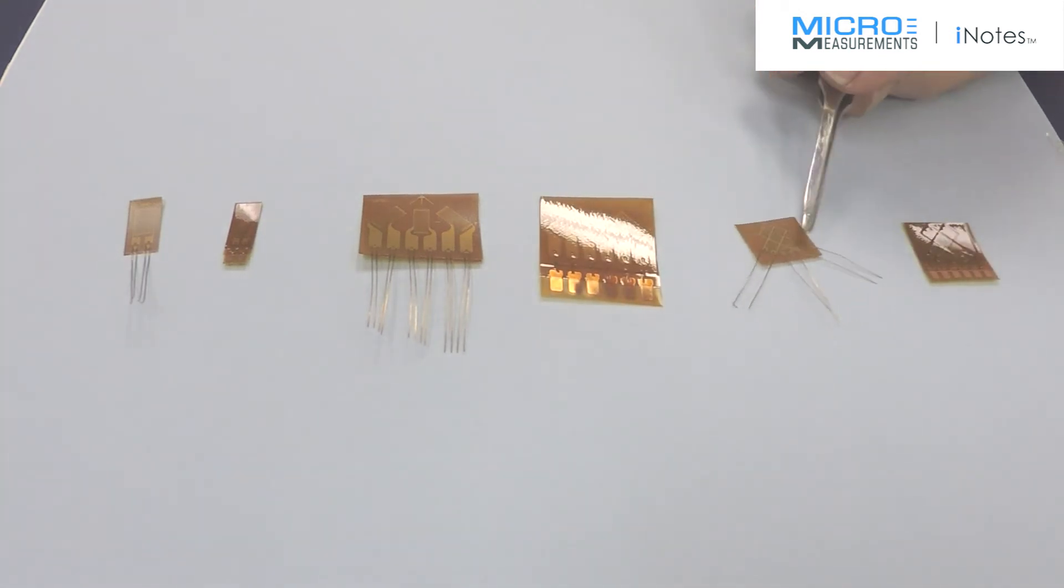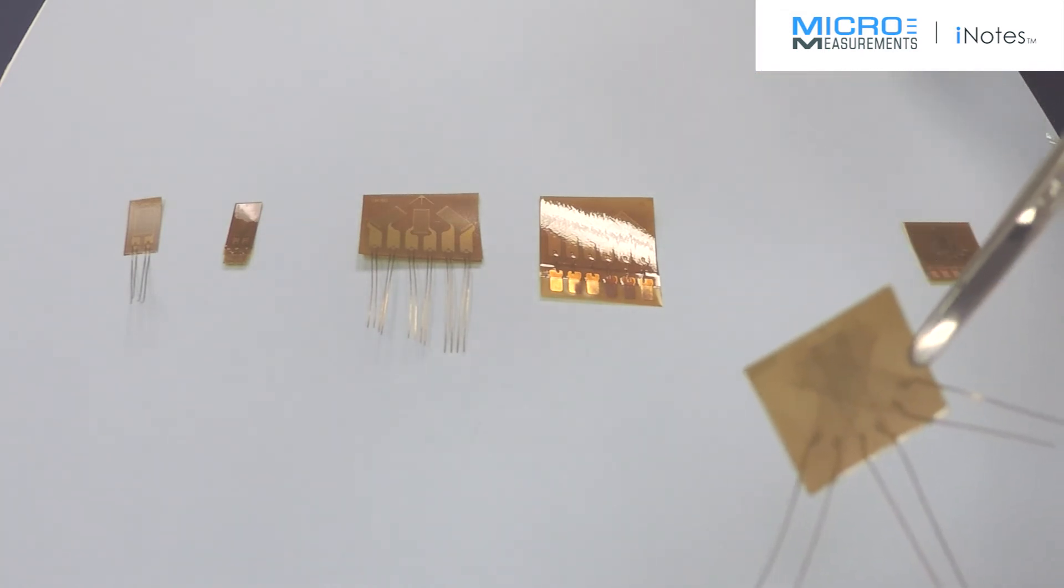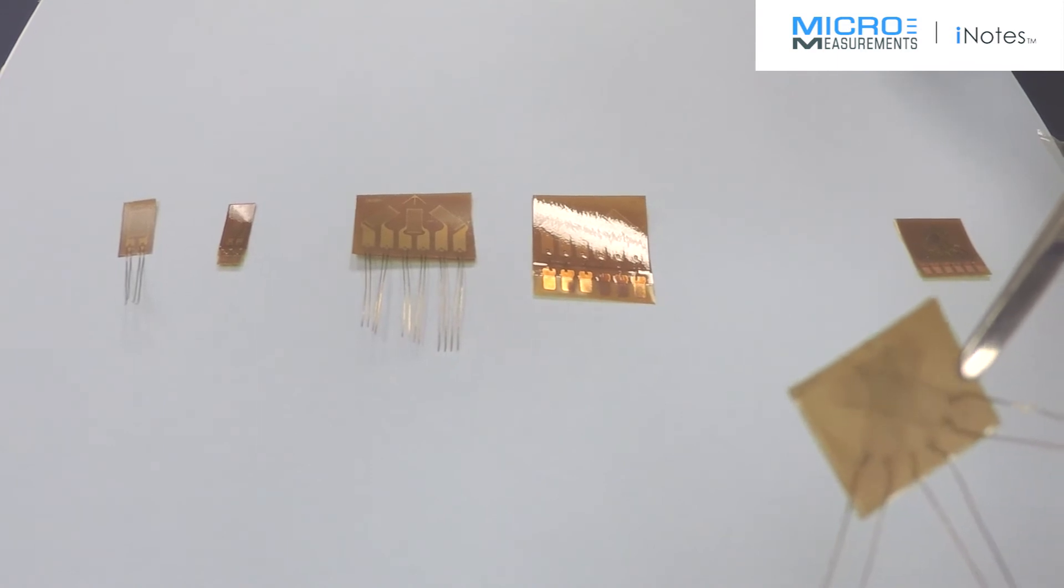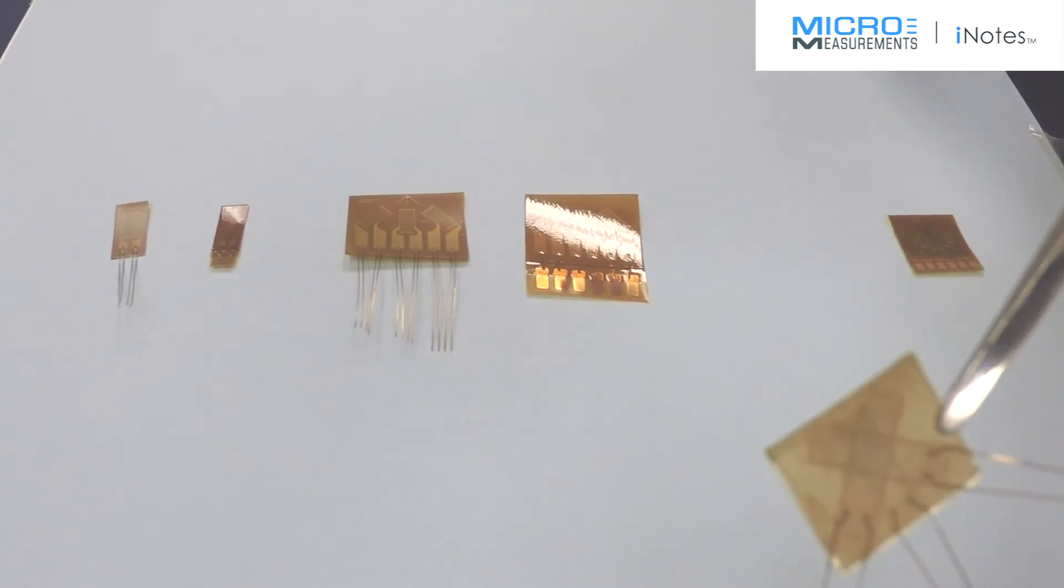However, when you go to a stacked construction like the 250WR, now this construction limits the thickness that we can have on those lead wires and therefore we only put one per tab. So if you're using a stacked rosette, either T or three element, your WK series is going to have a single lead per tab.